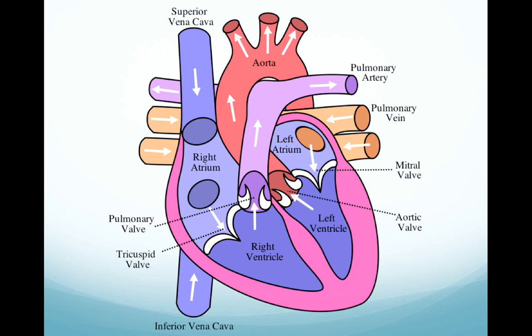The heart has four chambers. The left and right atria — the singular is atrium — are thin-walled upper chambers, and then the left and right ventricles are the thicker-walled lower chambers. The heart also has four valves between the ventricles, between the atria and the ventricles, and between the ventricles and the outflow tract. Those valves direct the flow of blood and prevent it from going backwards. If you have a heart murmur, a lot of times that's because one of those valves is faulty and it's allowing backflow of blood in the heart.